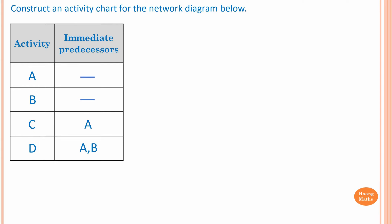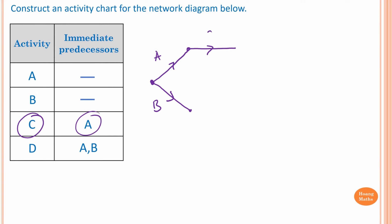We know Activity A and B have no immediate predecessor — in other words, there are no prerequisites for Activity A and B. So I just draw Activity A first, and this is Activity B. In order to do Activity C, we need to complete Activity A first, so I draw a line here — this is Activity C.